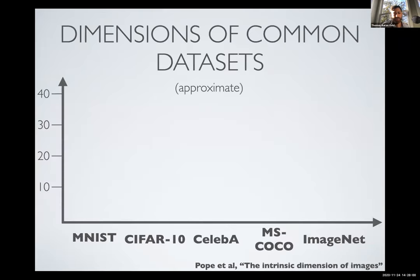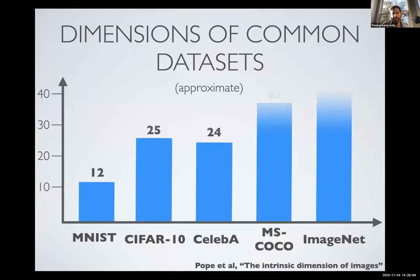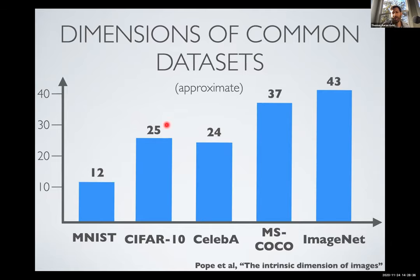When we throw these estimators at realistic image datasets, we estimate a dimension of about 12 for MNIST and about 25 for CIFAR-10. Interestingly, CELEB-A, which has much higher extrinsic dimensionality than CIFAR-10, our estimators say it has about the same intrinsic dimensionality as CIFAR-10 — roughly 25. That may be because in CELEB-A faces are centered and frontalized, whereas CIFAR-10 has more variation in some sense. Going up to more complex datasets like MSCOCO and ImageNet, we estimate a dimensionality of 43 for ImageNet — which I think is shockingly low for such a complex dataset.